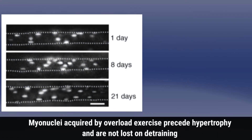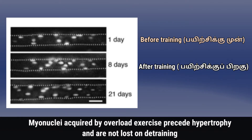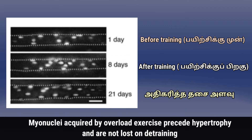In the study, you start with a baseline number of myonuclei in your muscles. When you create an overload through training, you increase the myonuclei number. This leads to hypertrophy — which is muscle gain.